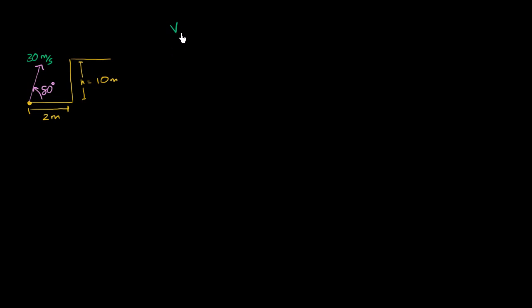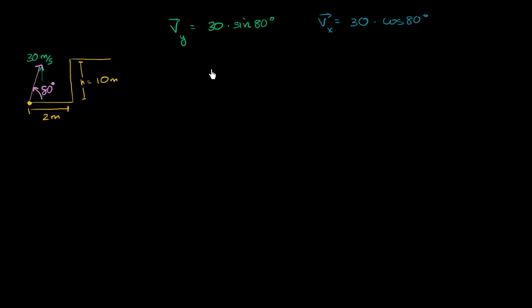The vertical component of our velocity is going to be equal to the magnitude of our total velocity — 30 meters per second — times the sine of 80 degrees, because sine is opposite over hypotenuse. The horizontal component of our velocity is going to be 30 meters per second times the cosine of 80 degrees. Cosine is adjacent over hypotenuse. If you feel like I'm skipping steps, the last few videos go into this in much more detail.